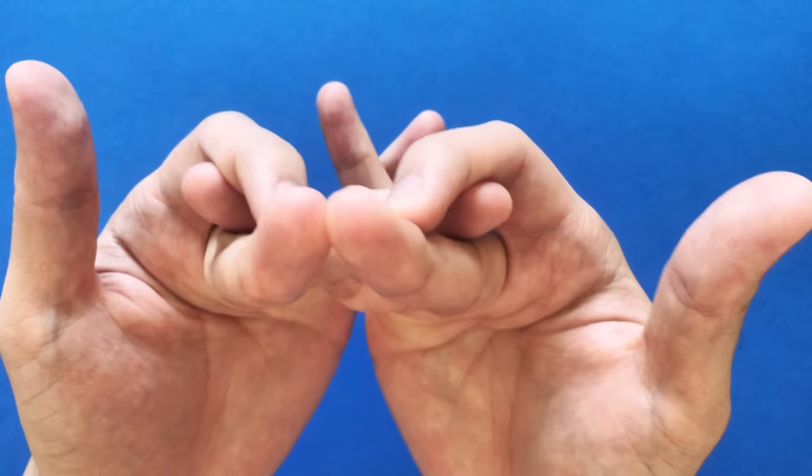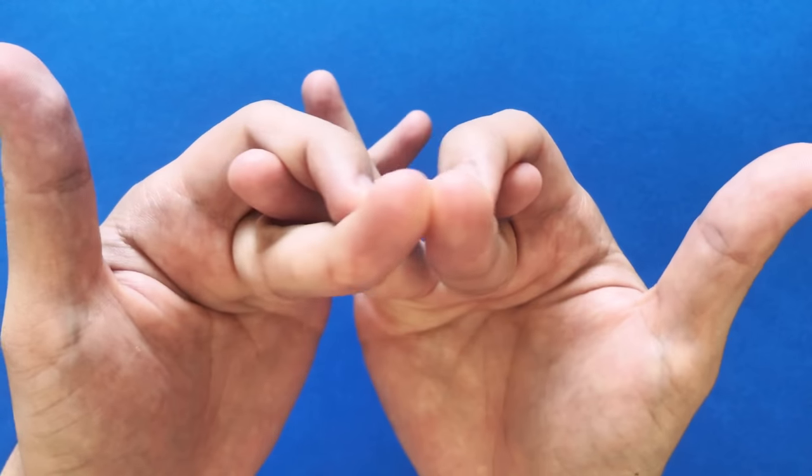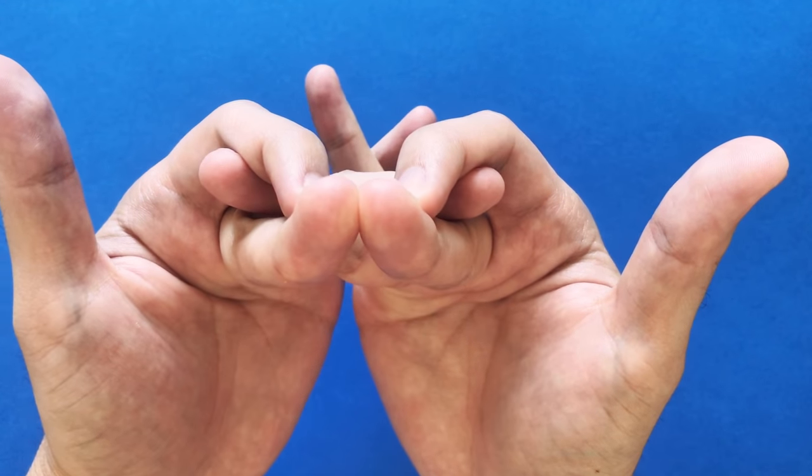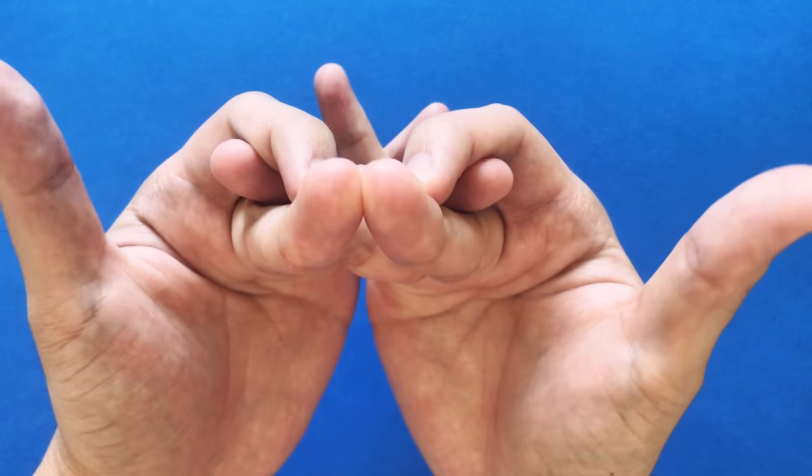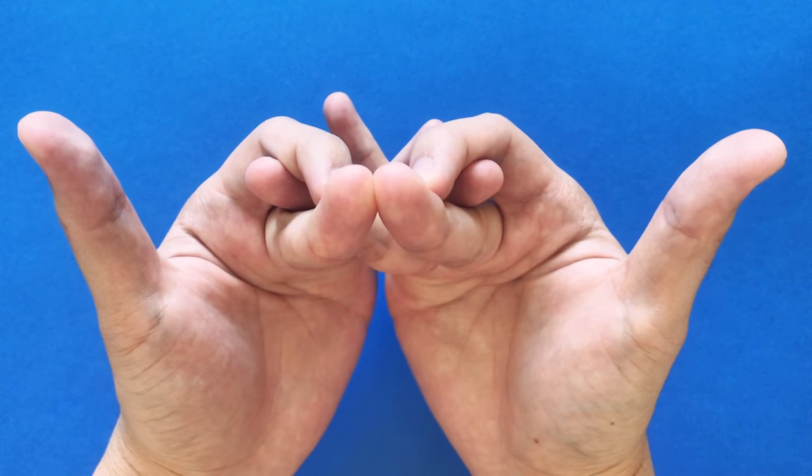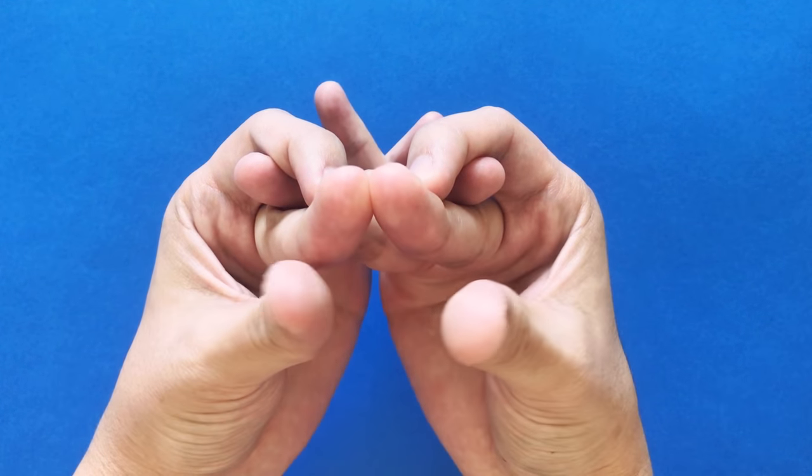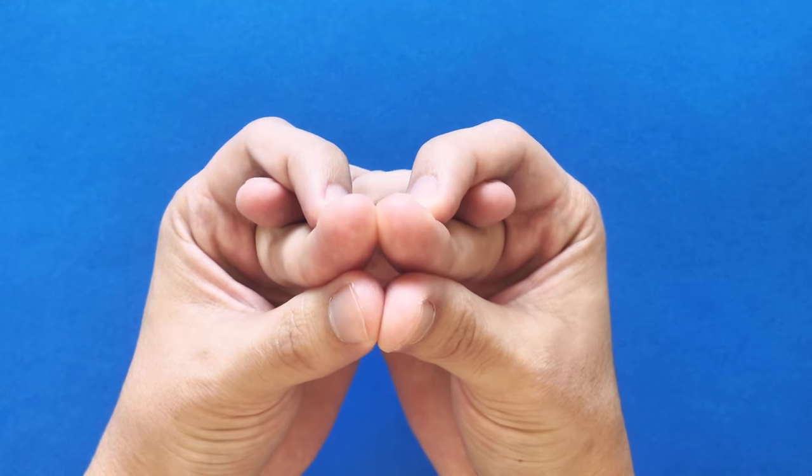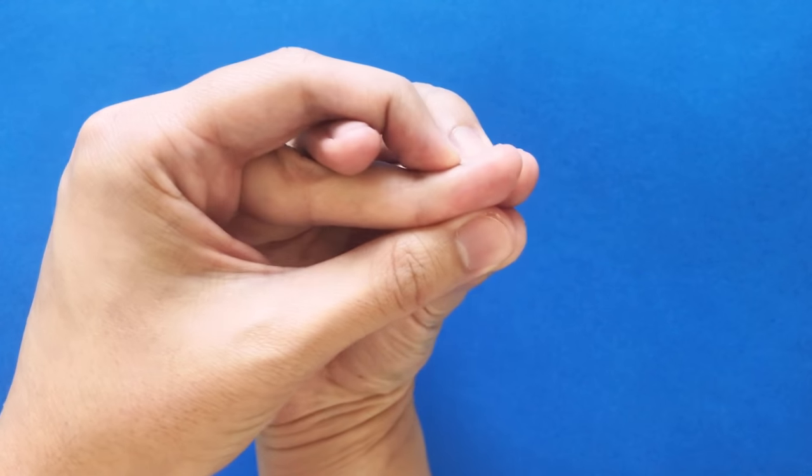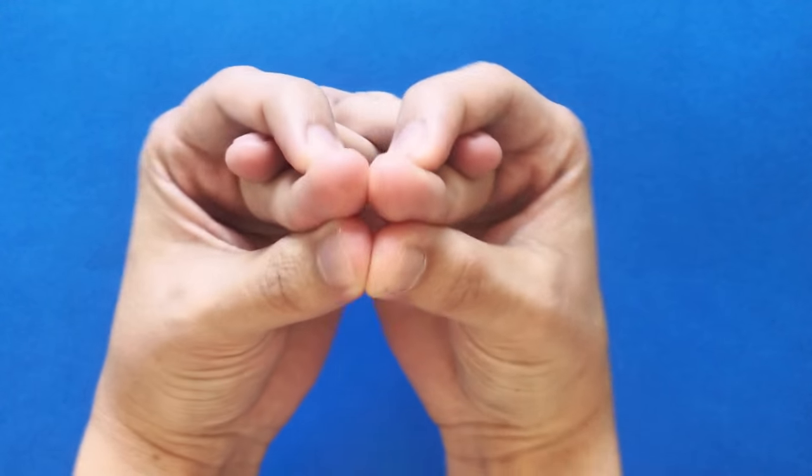So now you've made the eyes and the nose of your snake. Last step, you take your thumbs and you bring them together in the middle. And there you have your cobra.